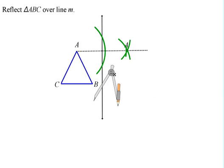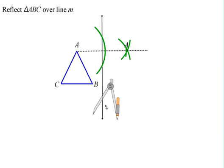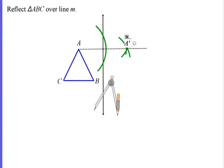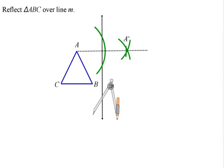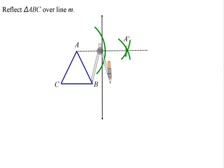Now we're going to repeat this process two more times for points B and C. So now from B we're going to switch up the colors here. Once again, you're going to create an arc that intersects your line of reflection in two points.